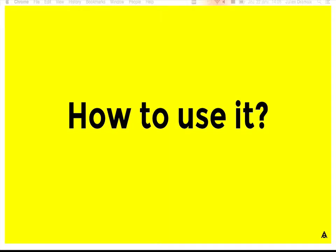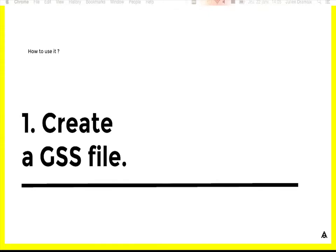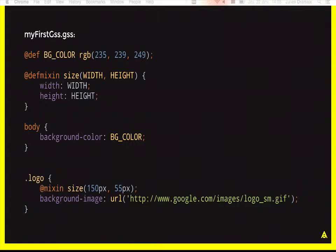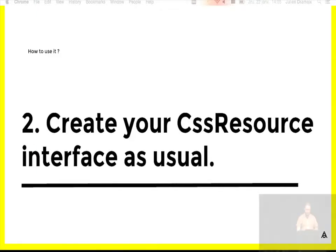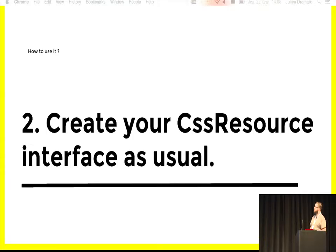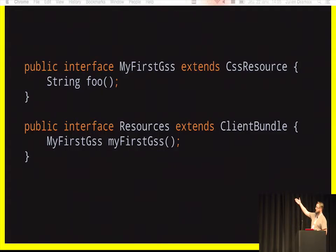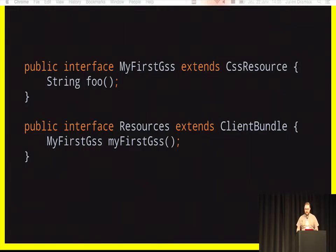Let me show you how to use GSS in your Grid application. Logically, the first thing to do is to create a GSS file — for example, my-first-gss.gss. You then create your CSS resource interface as usual: an interface extending CssResource, and a client bundle that gives you an instance of your interface.